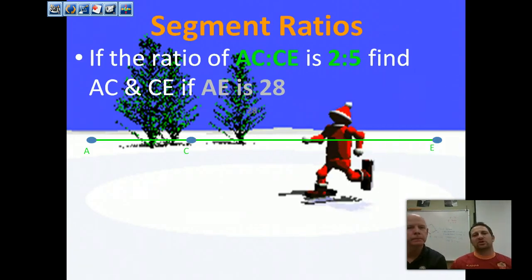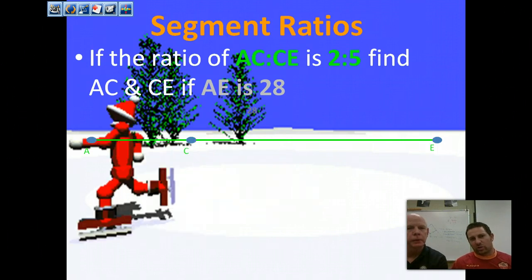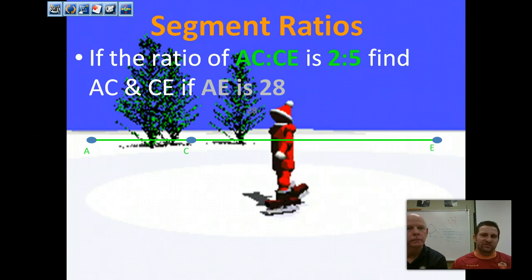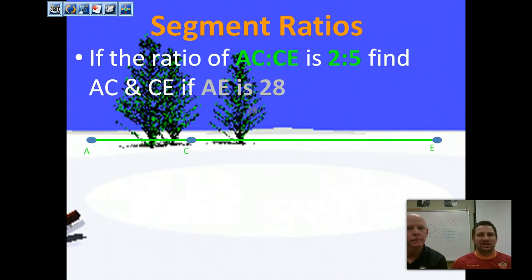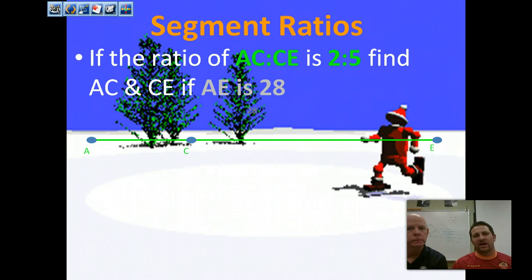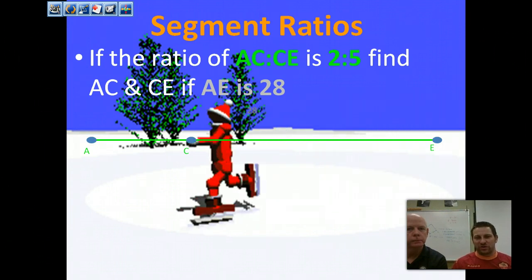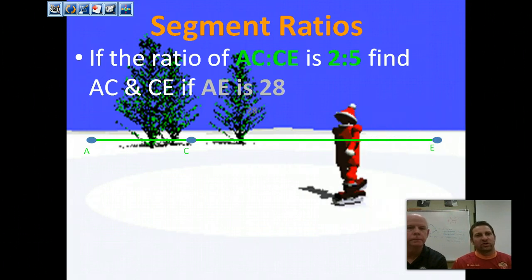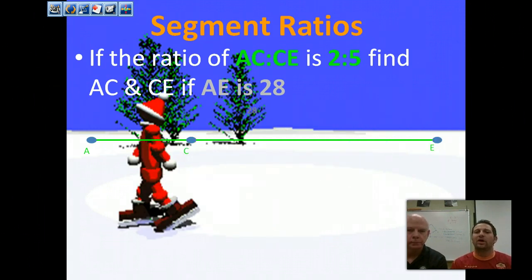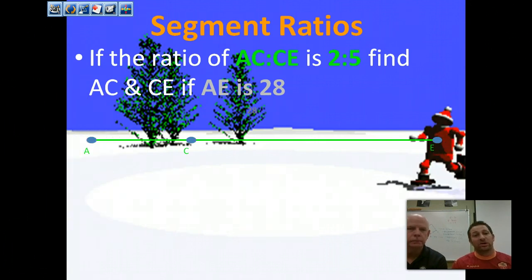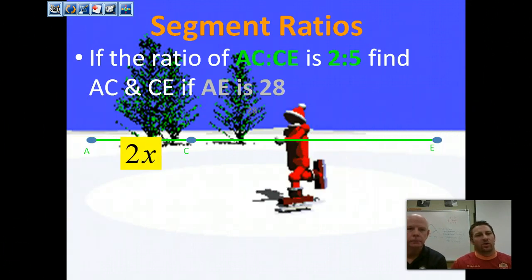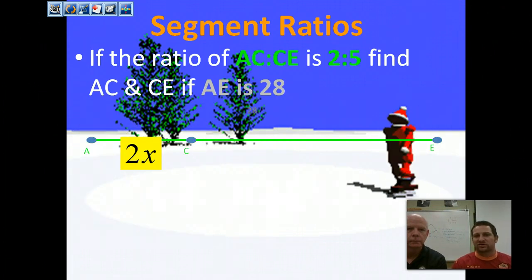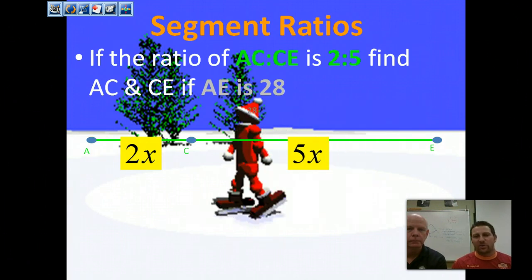Segment ratios can be a little bit tricky. If the ratio of AC to CE is 2 to 5, and AE is 28, we need to find the lengths of AC and CE. The ratio is part to part, and the whole is 28. We don't know AC, so we call it 2x, and CE is 5x.